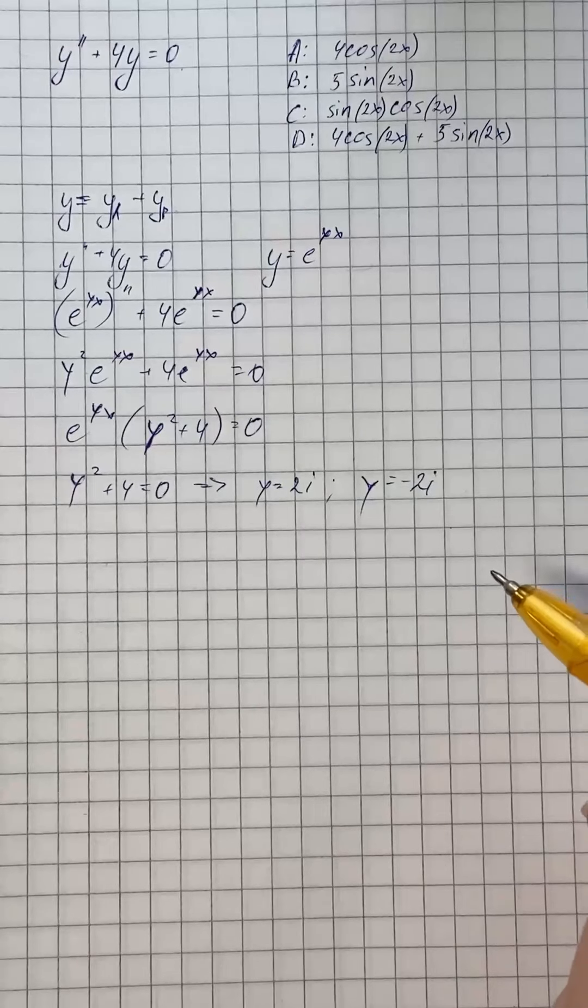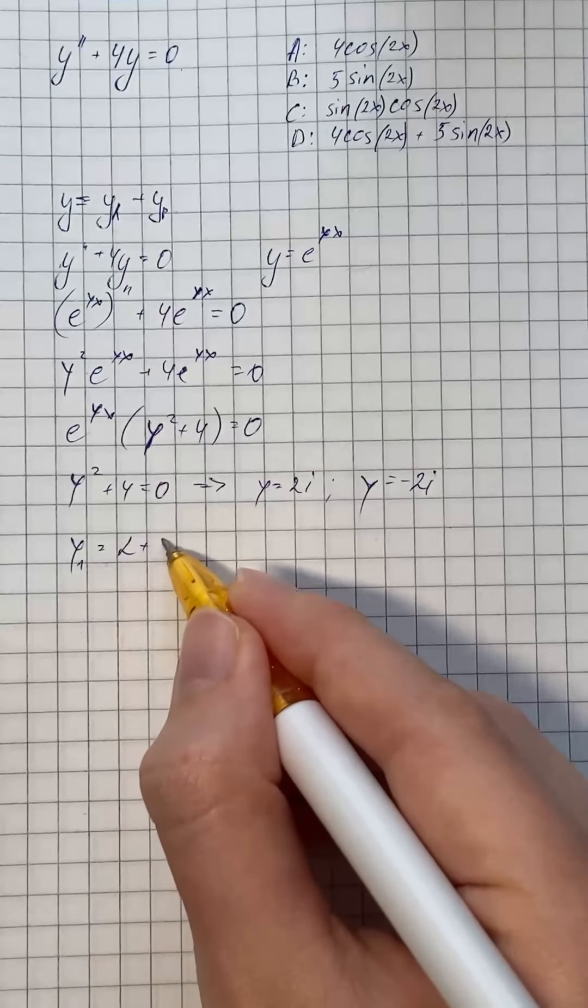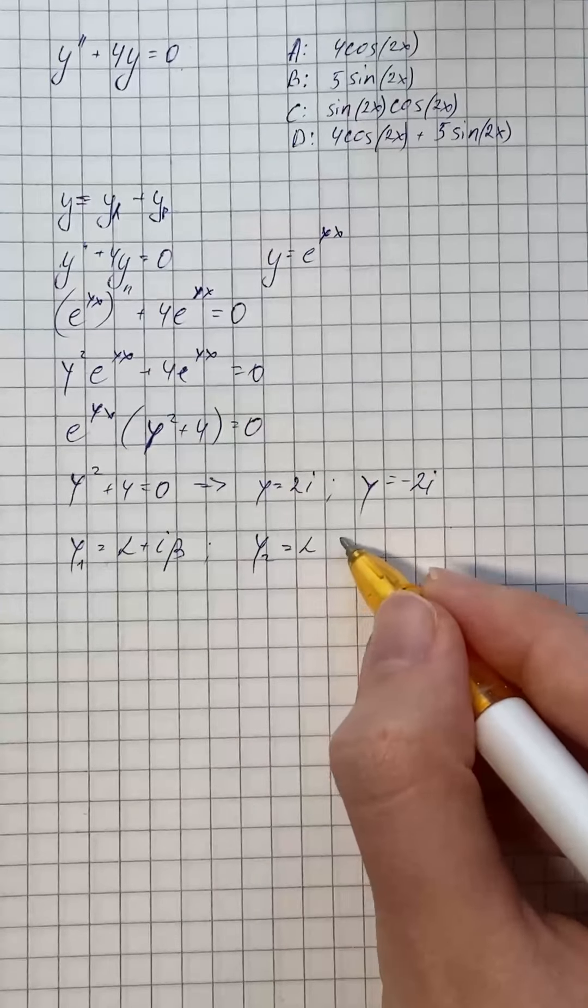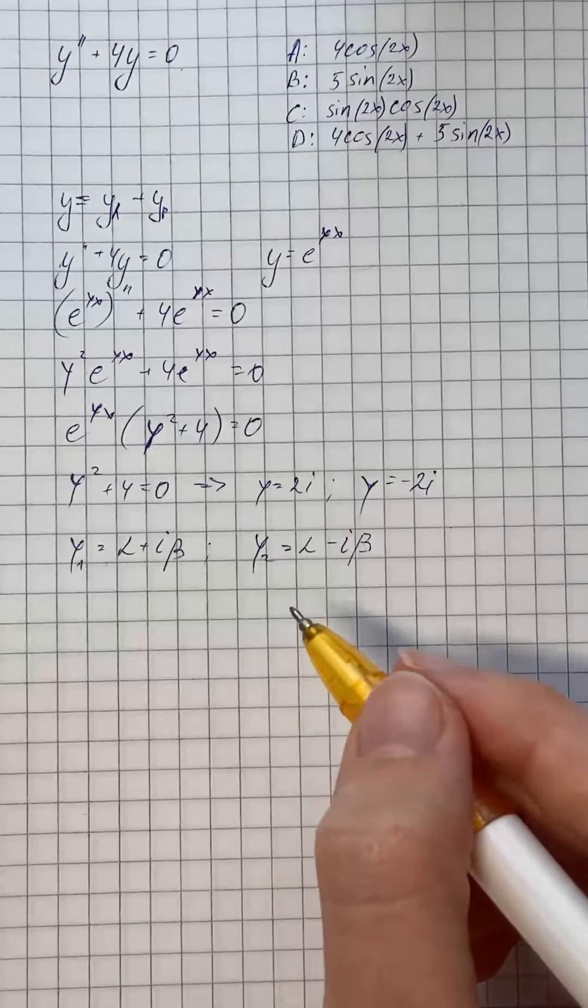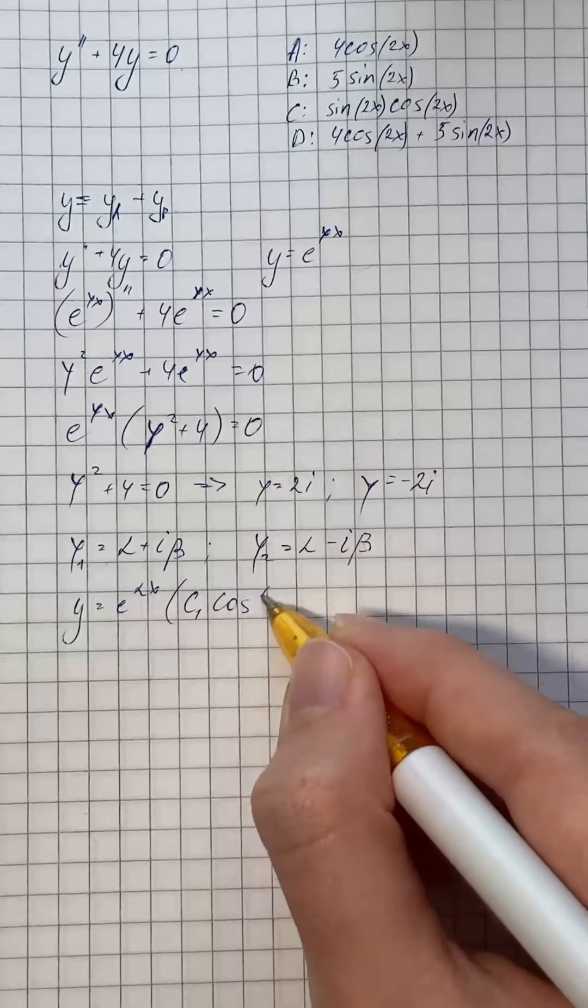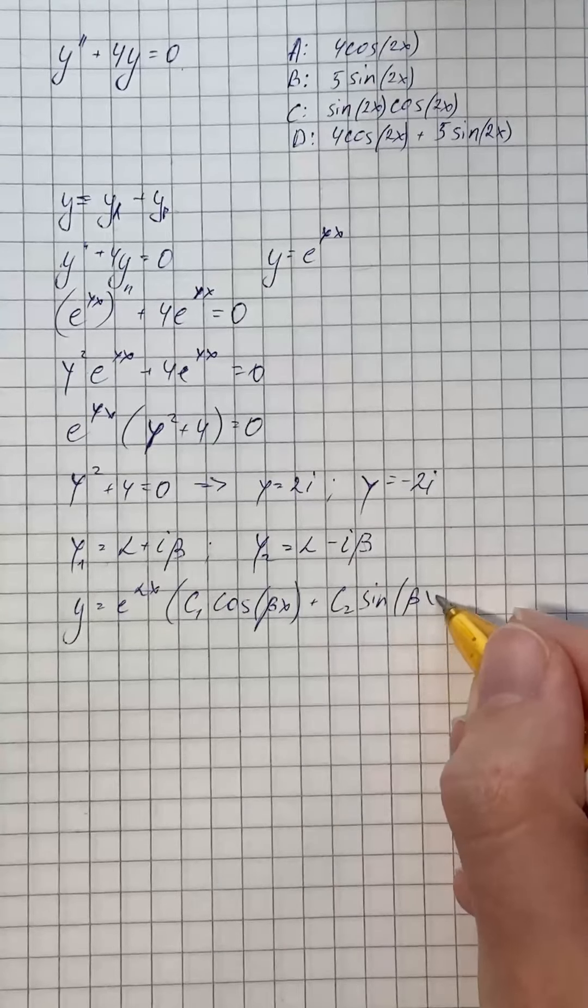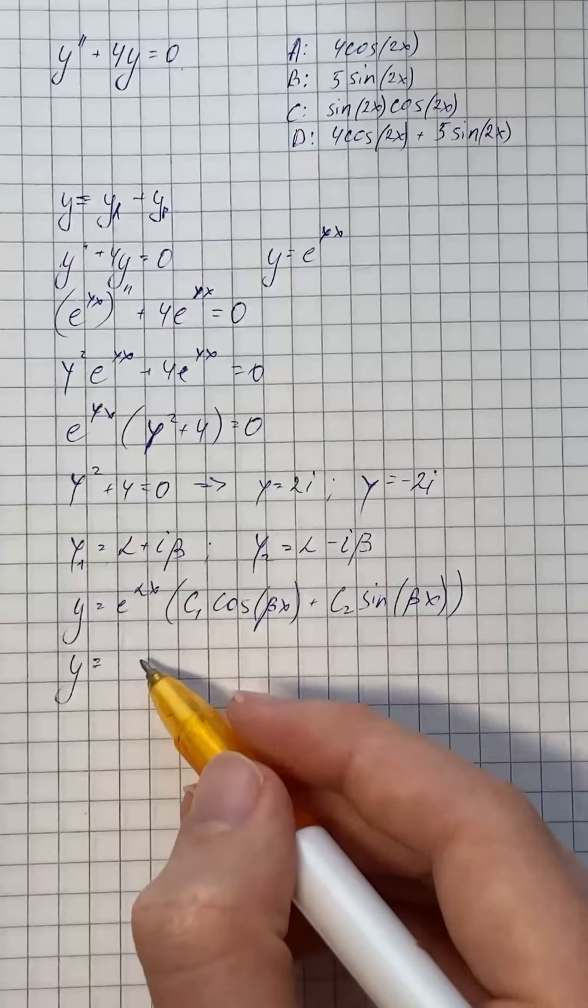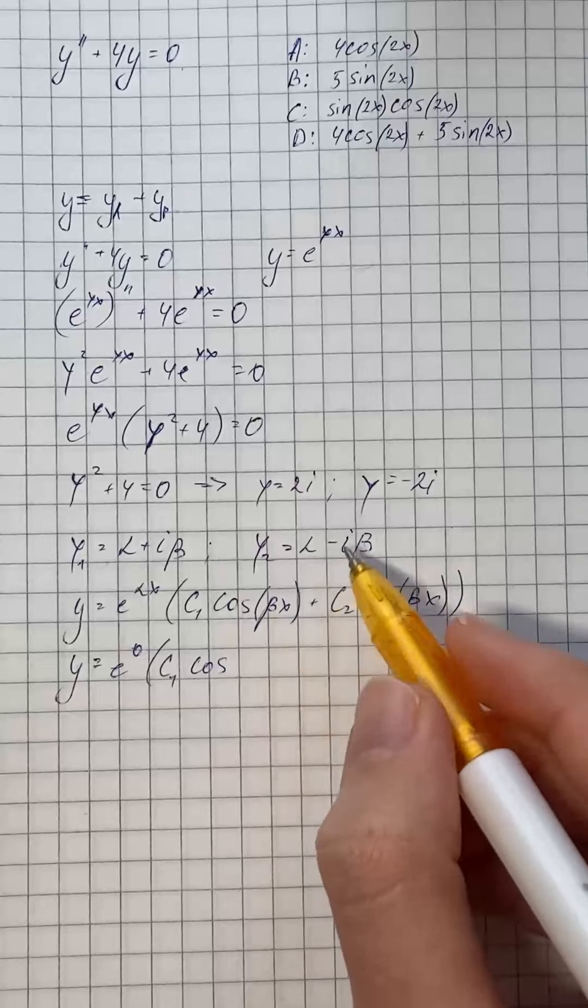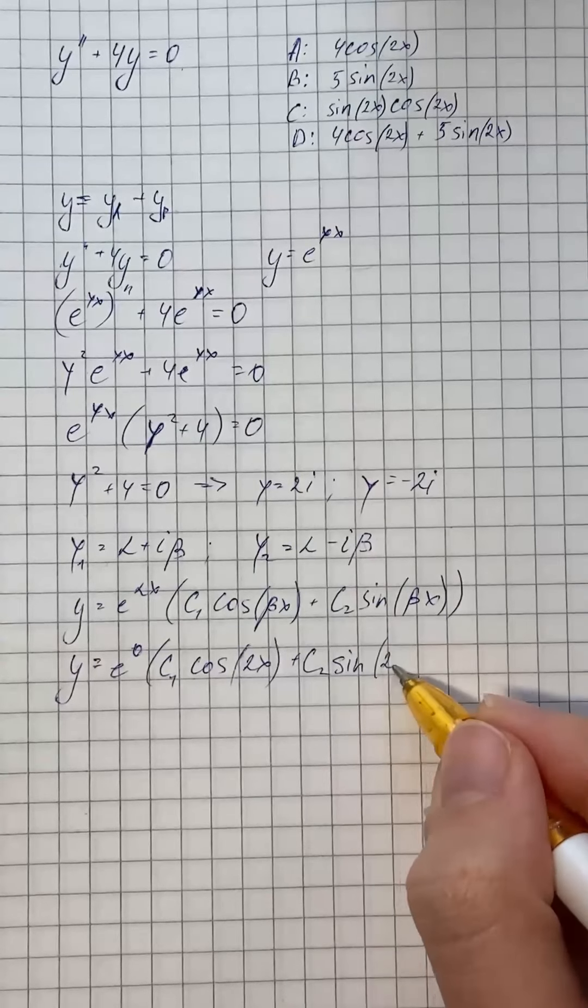So for two complex roots which are not equal to each other, where the first root is in the form alpha plus i times beta, and the second root is alpha minus i times beta. The general solution takes the form e to the power of alpha x times c1 times cosine of beta x plus c2 times sine of beta x. Therefore we substitute alpha with 0 and beta with 2. So that's cosine of 2x plus c2 times sine of 2x.